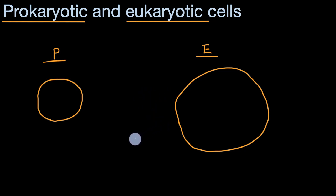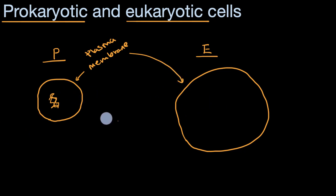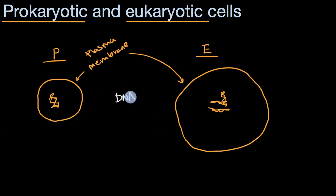Another commonality is that they both have genetic material in the form of DNA. Let me label all these things. We have our plasma membrane, which is in both of them. Then we have genetic material — DNA — that is the genetic material in both of these. I'm focusing on the similarities first.